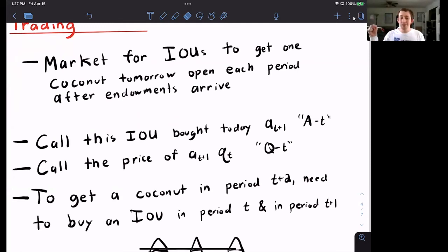Tomorrow you do the same thing. You buy an IOU tomorrow to give you a coconut in t plus one. That is the only way that you can take a coconut from today into two days from now or into some number of periods into the future.